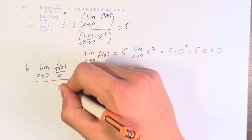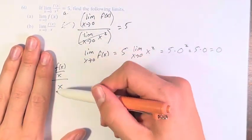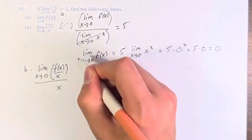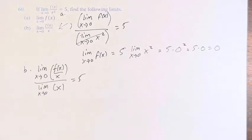This is equivalent, ignoring the limit. This double fraction is equivalent to f(x) over x squared. So we can separate it, take the limit of the top and the limit of the bottom. This is equal to 5.